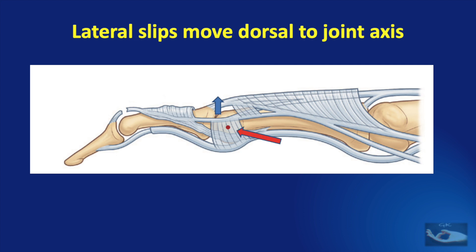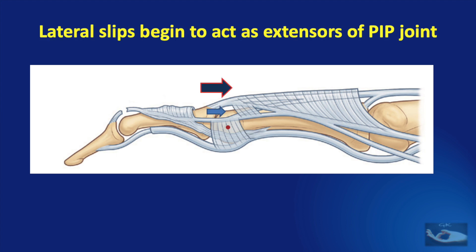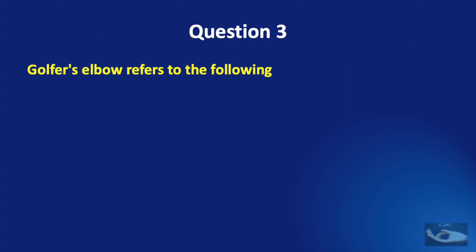This increased force also acts on the lateral slips, making them come to the dorsal aspect. As they lie dorsal to the joint axis, they become extensors of the PIP joint in addition to the already powerful central slip. That is how the swan neck deformity — hyperextension at the proximal interphalangeal joint — develops following a mallet finger injury.